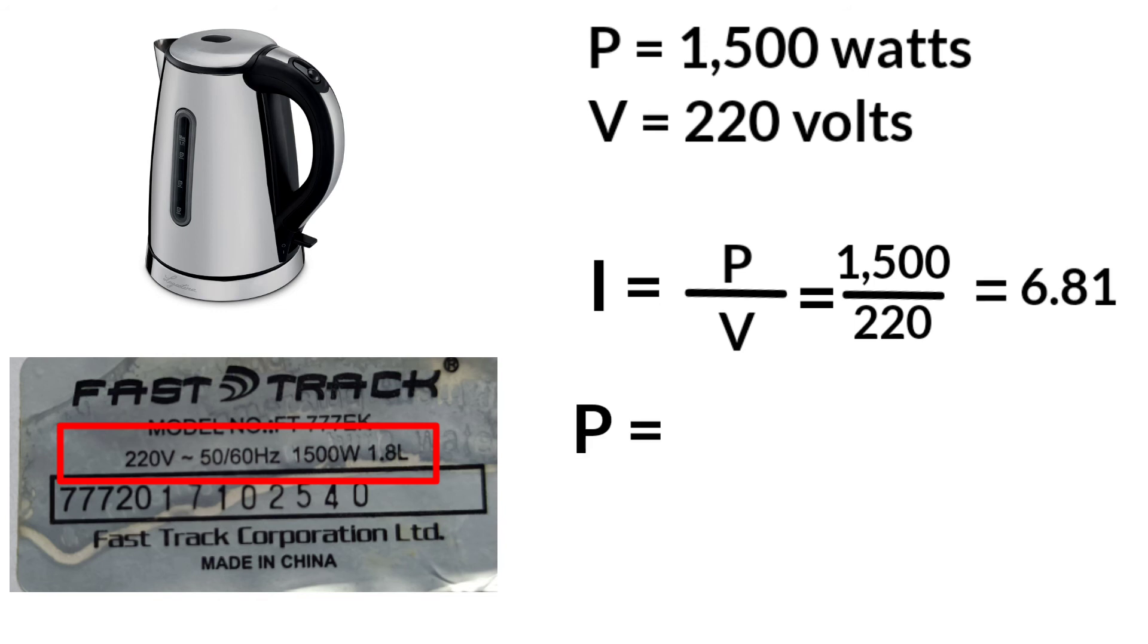If you are looking for power or watts, current or ampere multiplied by voltage equals power. So 6.81 amperes multiplied by 220 volts is equal to 1500 watts.